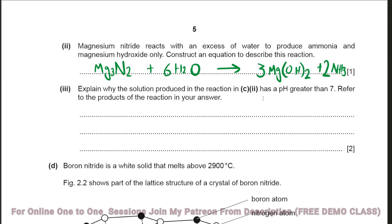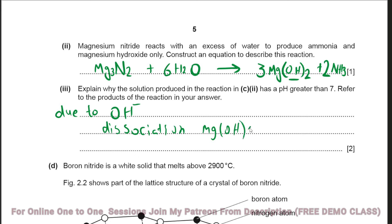Explain why the solution produced has a pH greater than 7. Magnesium hydroxide dissociates to give OH⁻ ions in solution, making it basic. Additionally, ammonia undergoes an acid-base reaction with water, also contributing to a pH greater than 7.